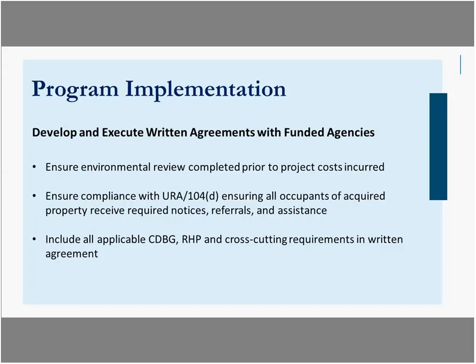The second set of written agreements would be with your funded agencies. Once you've selected projects, developed and submitted your action plan, HUD has approved it and sent your grant agreement, you're ready to hit the ground running. At the written agreement stage, remember a couple of key cross-cutting considerations: your environmental review must be complete, and you want to ensure compliance with URA or 104(d) — all occupants of acquired or rehabbed property and owners have the required notices, referrals, and assistance. Include all applicable CDBG and recovery housing cross-cutting requirements within that agreement, and once it's signed, you would set up your activities in DRGR.